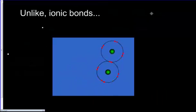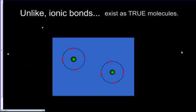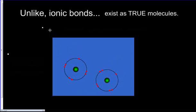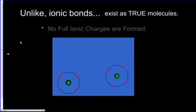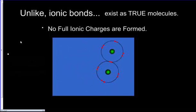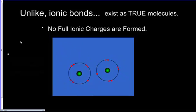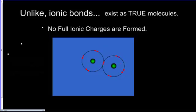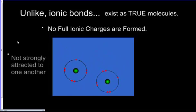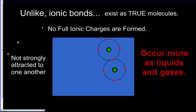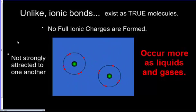Unlike ionic bonds, covalent bonds exist as true molecules. Because electrons are shared in covalent bonds, no full ionic charges are formed since we're not fully transferring the electron — we're not losing it or gaining a new one. Thus, covalent bonds are not as strongly attracted to one another, and they move around more freely, tending to exist as liquids or gases at room temperature.